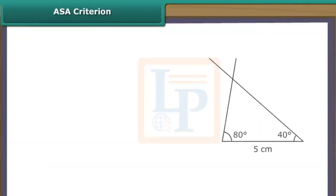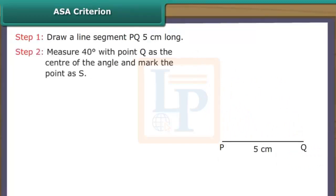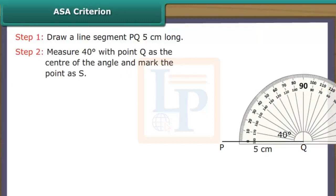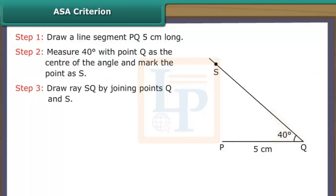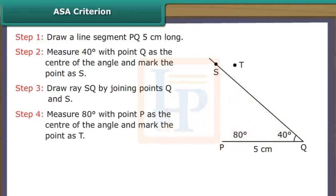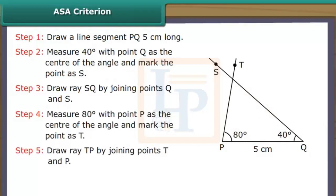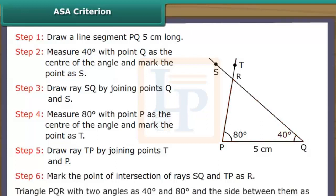ASA criterion: Let us draw a triangle, two of whose angles measure 40 degrees and 80 degrees and the side between them measures 5 cm. Draw a line segment PQ 5 cm long. Measure 40 degrees with point Q as the center of the angle and mark the point as S. Draw ray QS. Measure 80 degrees with point P as the center of the angle and mark the point as T. Draw ray TP. Mark the point of intersection of rays QS and TP as R. Triangle PQR with two angles of 40 degrees and 80 degrees and the side between them of 5 cm is constructed.